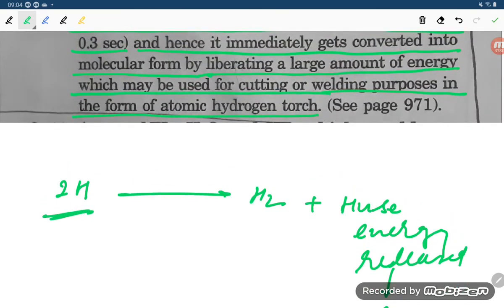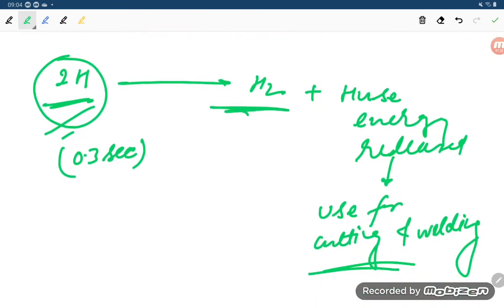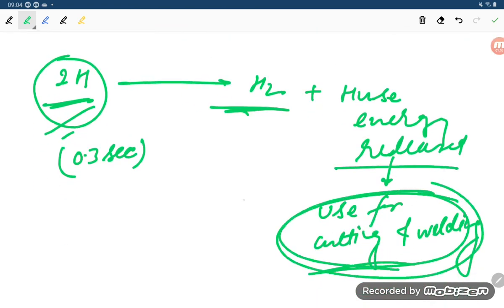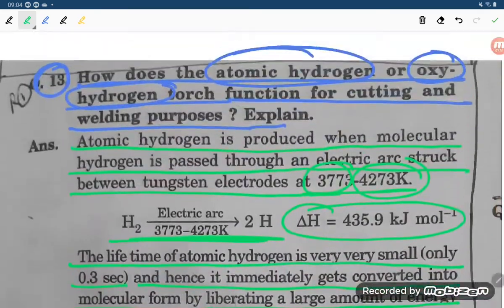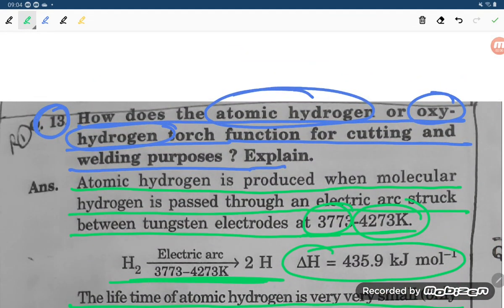So firstly, the production of atomic hydrogen itself is difficult. Again, after it is produced, its lifetime is only 0.3 seconds. After that, it will form the H2 bond in an exothermic process, releasing tremendous energy which is used for cutting and welding. So this is all about the answer. Thank you so much for watching.